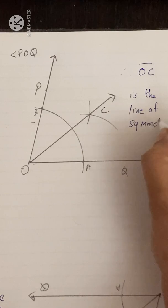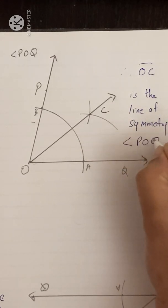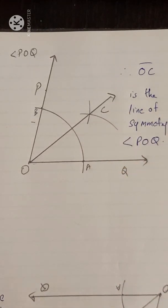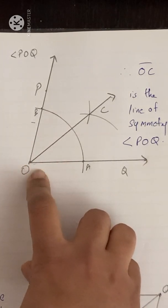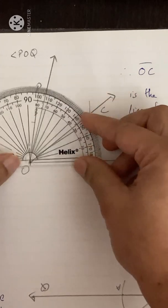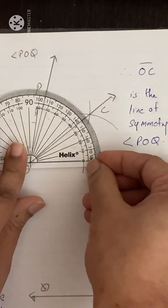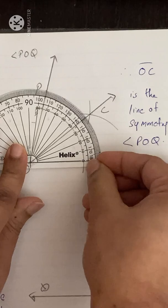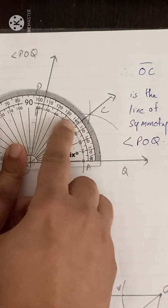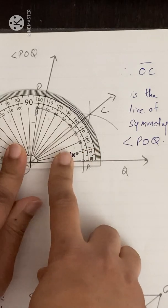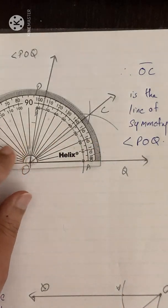OC is the line of symmetry of angle POQ. Line of symmetry means this will divide it into two equal parts, same as a bisector. You can check this — 75 divided by 2 is 37.5, so each part will be 37.5 degrees.